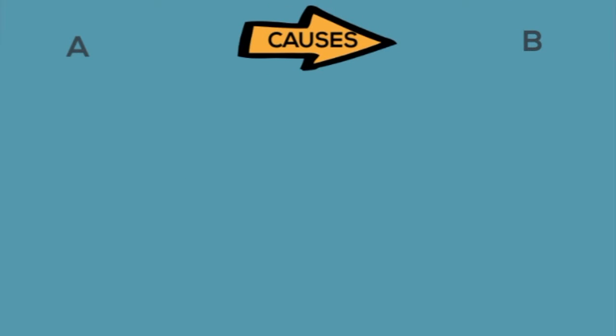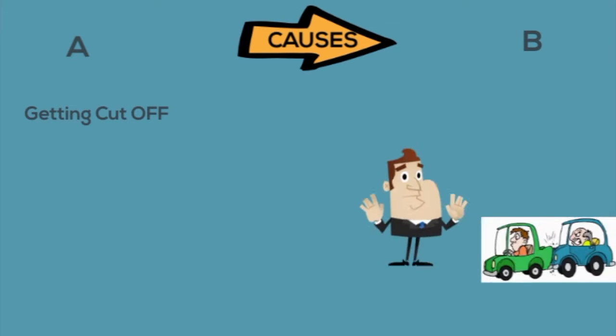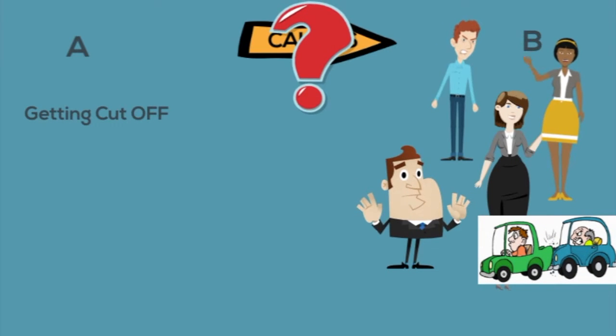Now remember, we're talking about cause and effect. So in order for A, getting cut off in traffic, to truly cause B, our reaction, the same thing would have to happen every time by every person. And that clearly isn't the case here. So human behavior doesn't follow the same rules as the laws of natural science. So we've got to change the equation just a bit.